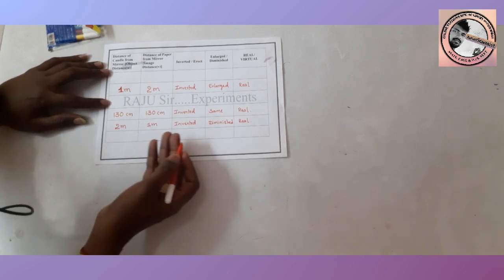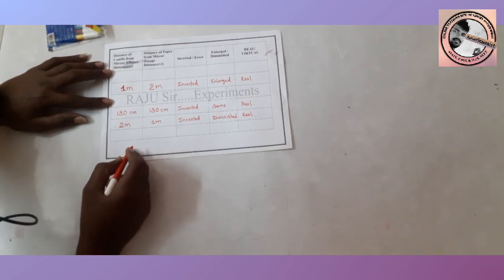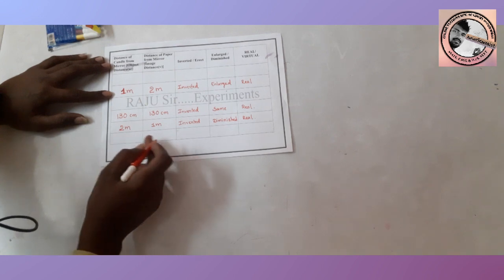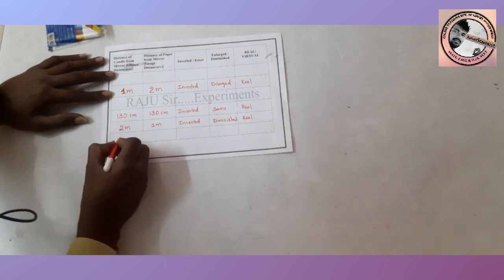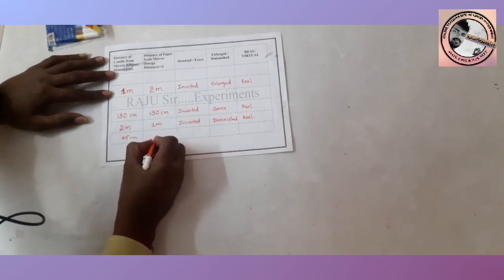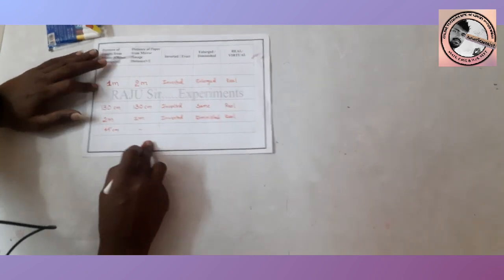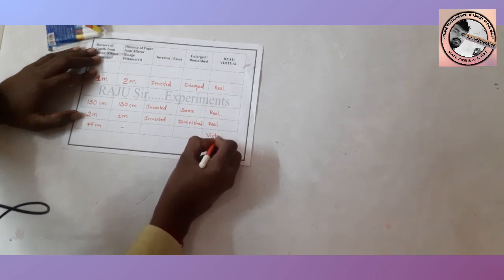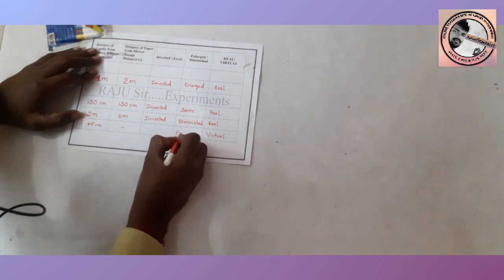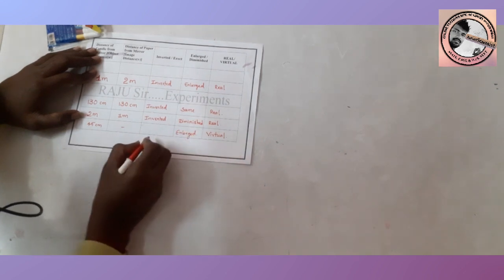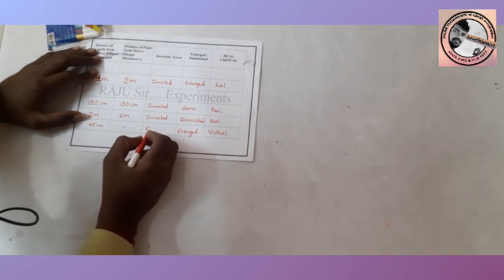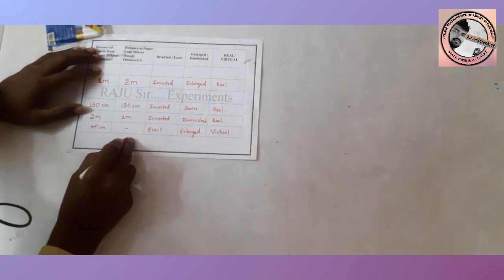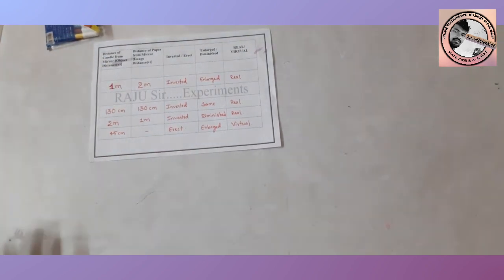When the object is placed between P and F — below 65 centimeters, for example at 45 centimeters — the image is formed inside the mirror, so the image is virtual. The image is enlarged, as seen in the experiment. The flame observed in the mirror is erect — it did not invert. So this gives a virtual, erect, and enlarged image.